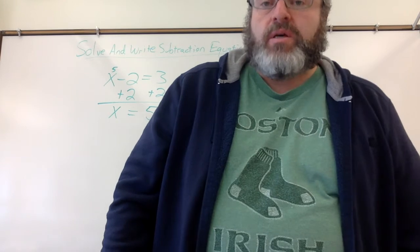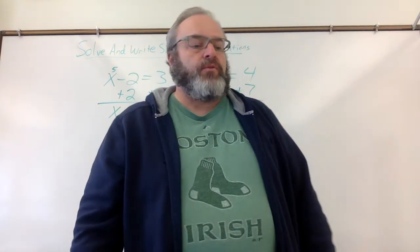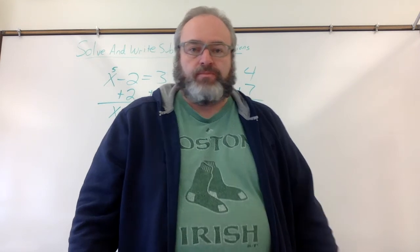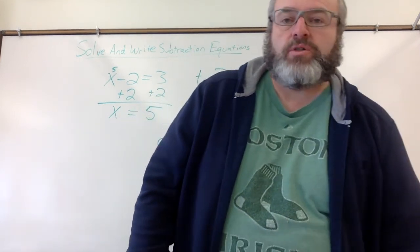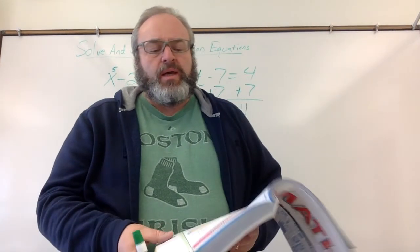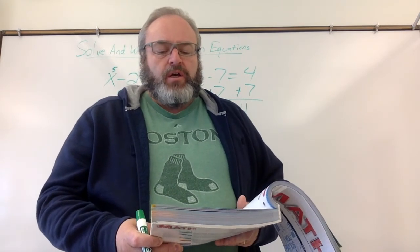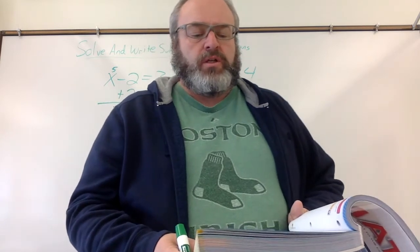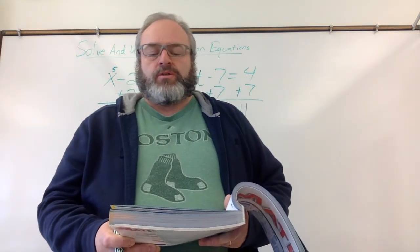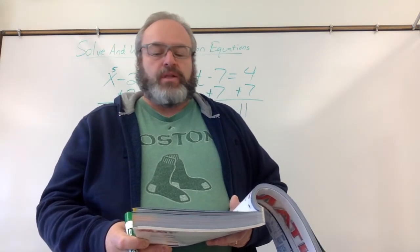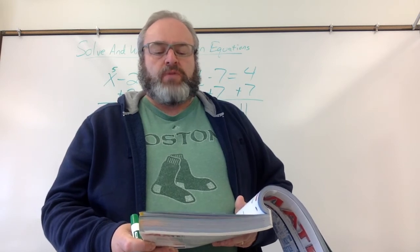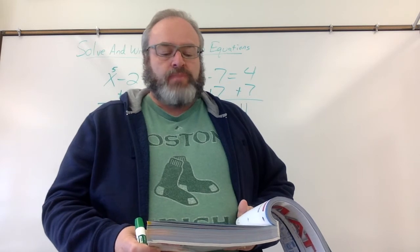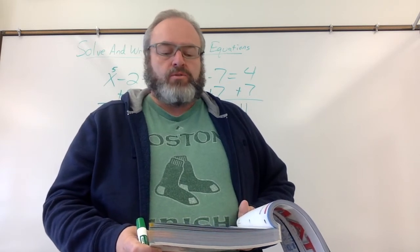Okay, so sometimes we're going to have word problems that we need to write an equation for. So, listen carefully to this word problem. At age 25, German Titov of Russia was the youngest person to travel into space. This is 52 years less than the oldest person to travel into space, which was John Glenn. How old was John Glenn? Write and solve a subtraction problem.